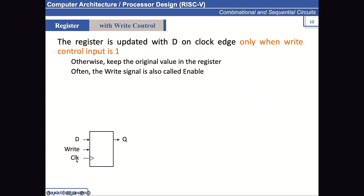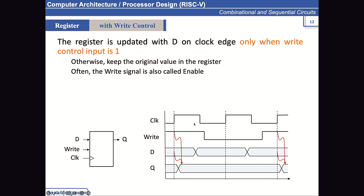Sometimes we need to control when we want to write data, so we add a write signal. When the write signal is 1, the data at the D input will be reflected and stored at Q; otherwise it will not. Looking at the updated waveforms: when the write signal is 1, whatever value D has is reflected at the output. When the write signal is lowered, even if there is a positive clock edge and D changes, the output does not change. When the write signal is asserted again, the change in D is reflected at the output on the next positive clock edge.